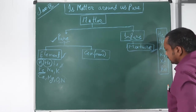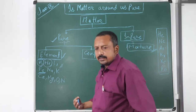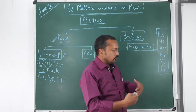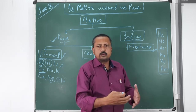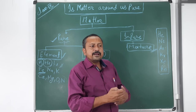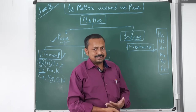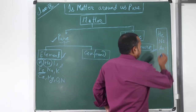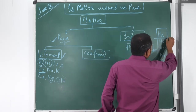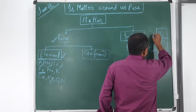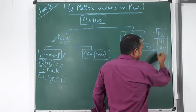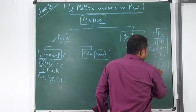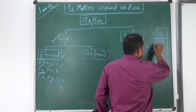Why do atoms want to attain inert gas configuration? Because these gases are highly stable. All inert gases complete their octet — meaning their outer orbit, the valence orbit, consists of eight electrons. In the case of helium, they complete the duplet, and all other inert gases complete their octet. The valence orbit means the outermost shell or outermost orbit of an atom.